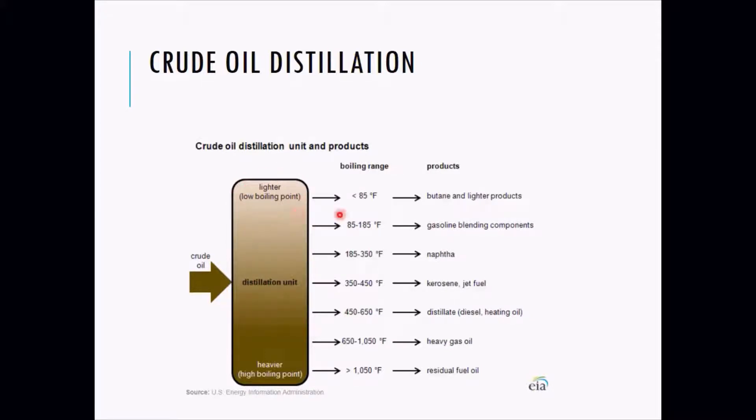You find always gases at the top, and the next level is gasoline blending components. The next level is naphtha, and after rising the temperature you will get kerosene and jet fuel. At 450 to 650 degrees Fahrenheit, you will be able to get the distillates like diesel or heating oil.